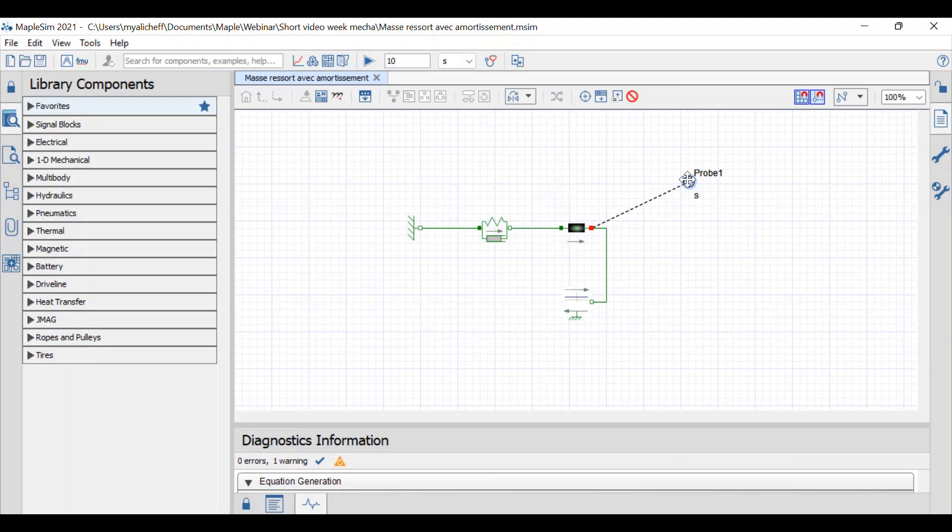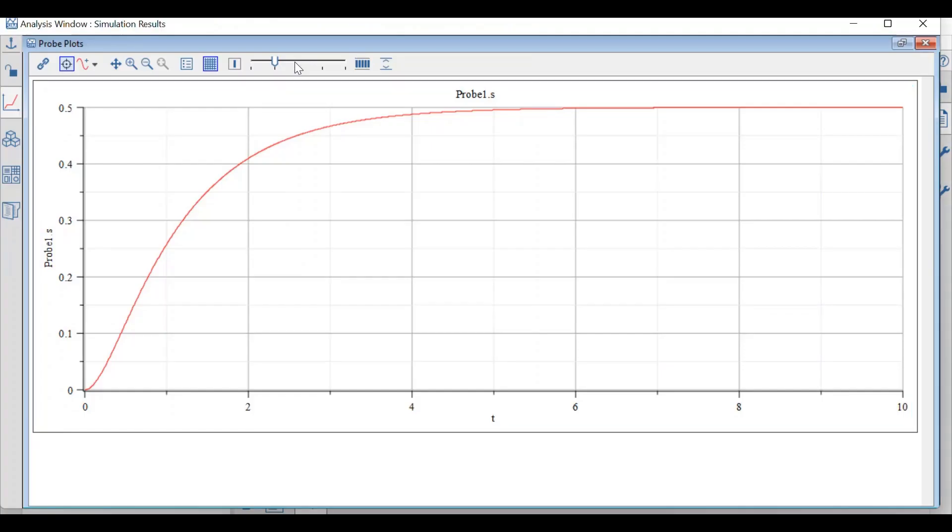We're adding a probe here to record the displacement of the mass. So here, our full system, we run a simulation and we get this plot. So here, displacement versus time. And you can see the same thing as in Maple. And here you can see as the time increases, your displacement tends to be like half a meter.